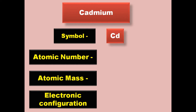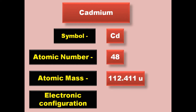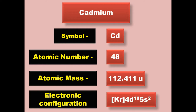Cadmium has symbol Cd, atomic number 48, atomic mass 112.411, electronic configuration [Kr] 4d10 5s2. Cadmium is a transition metal and exists in solid form at room temperature.